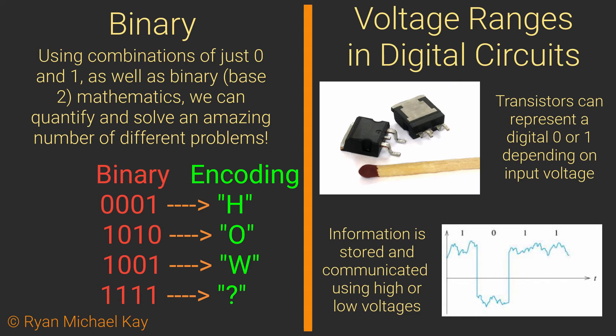Most digital computers typically use higher or lower ranges of voltages to represent zero and one, or on and off. The reason we use the symbols zero and one as representations of something like a high or low voltage is that it allows us humans to use mathematics to understand, design, and manipulate our digital computers. Languages like Java hide most of these details from us application developers.